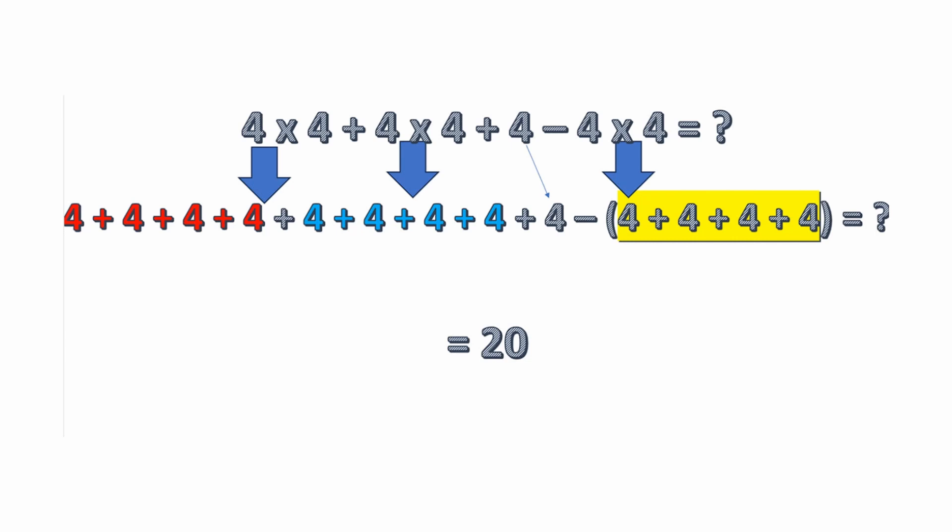Then we have a minus, and here's where you've got to keep track of your signs. We had minus 4 times 4 at the top, so that's minus the quantity of 4 plus 4 plus 4 plus 4. That's still minus 16 — 4 plus 4 plus 4 plus 4 is 16, and we're subtracting it. If you add it all up and subtract, you're going to end up with the answer of 20.